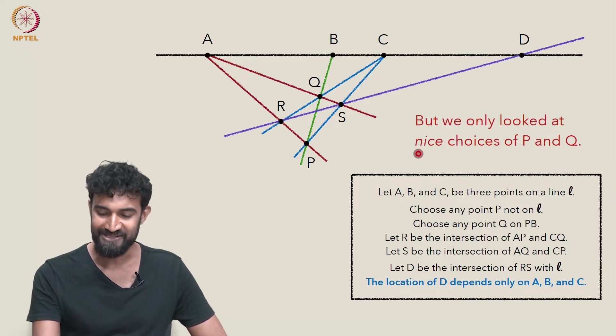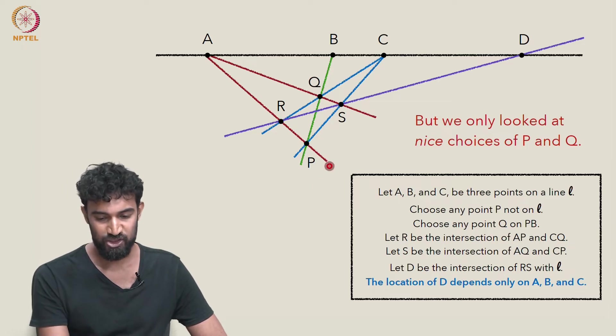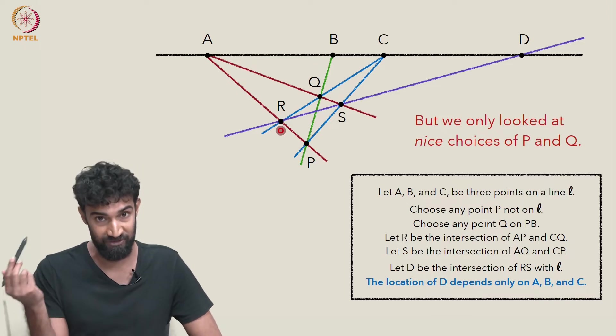But we only looked at nice choices of P and Q in our proof. We only looked at choices where it was easy to imagine this as a perspective view of a parallelogram.